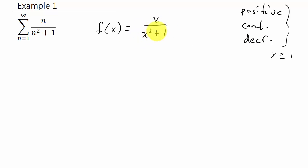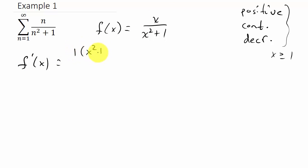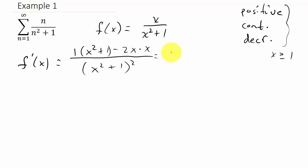We know it's going to be positive because the values are from 1 to infinity — we're only plugging in positive values, so this is always going to be positive. Let's go ahead and take the derivative using the quotient rule. That's going to equal negative x squared plus 1, over x squared plus 1, squared.